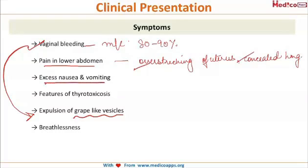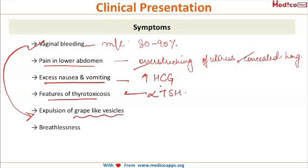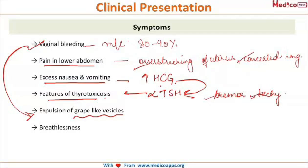These patients usually have excessive nausea and vomiting because HCG levels are very high in cases of molar pregnancy. There are also features of thyrotoxicosis, because the alpha unit of HCG is similar to the alpha unit of TSH, thus producing features of thyrotoxicosis. The patient can present with tremors or tachycardia.